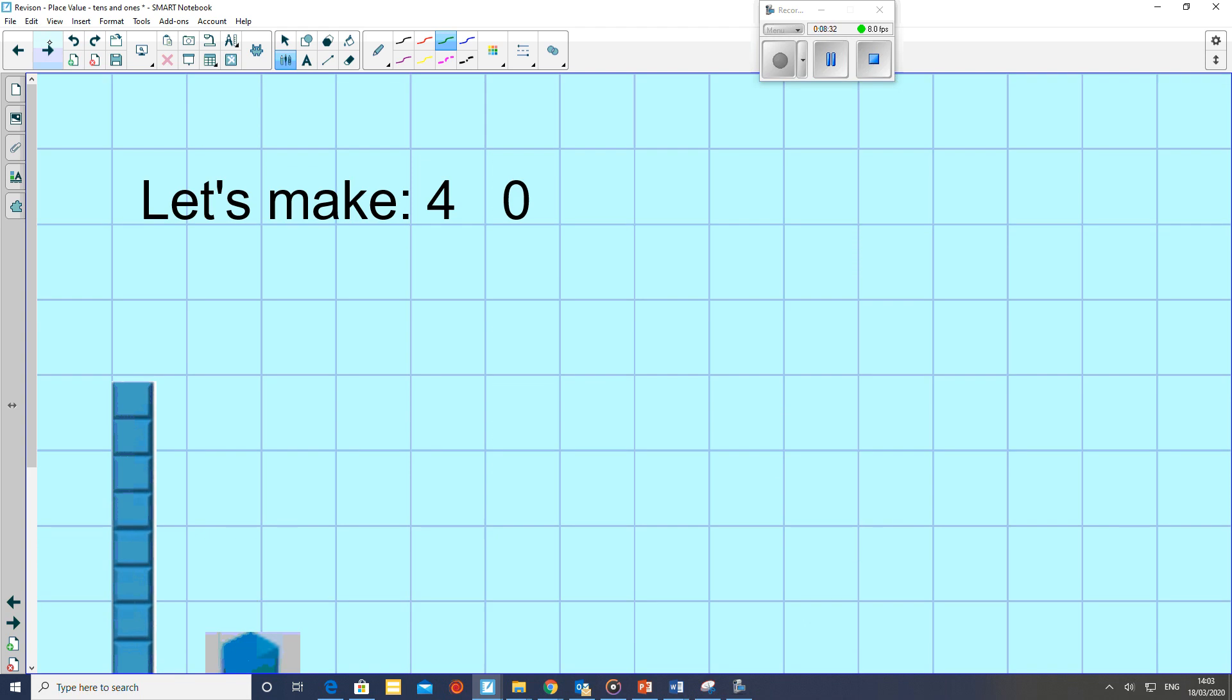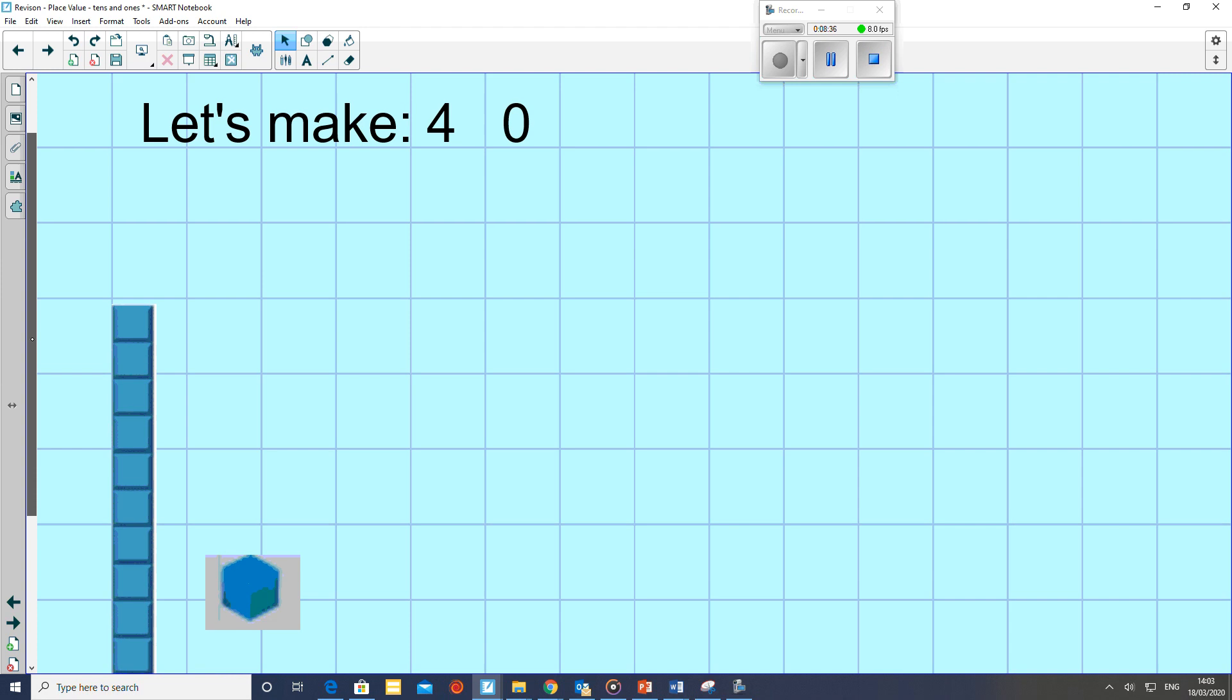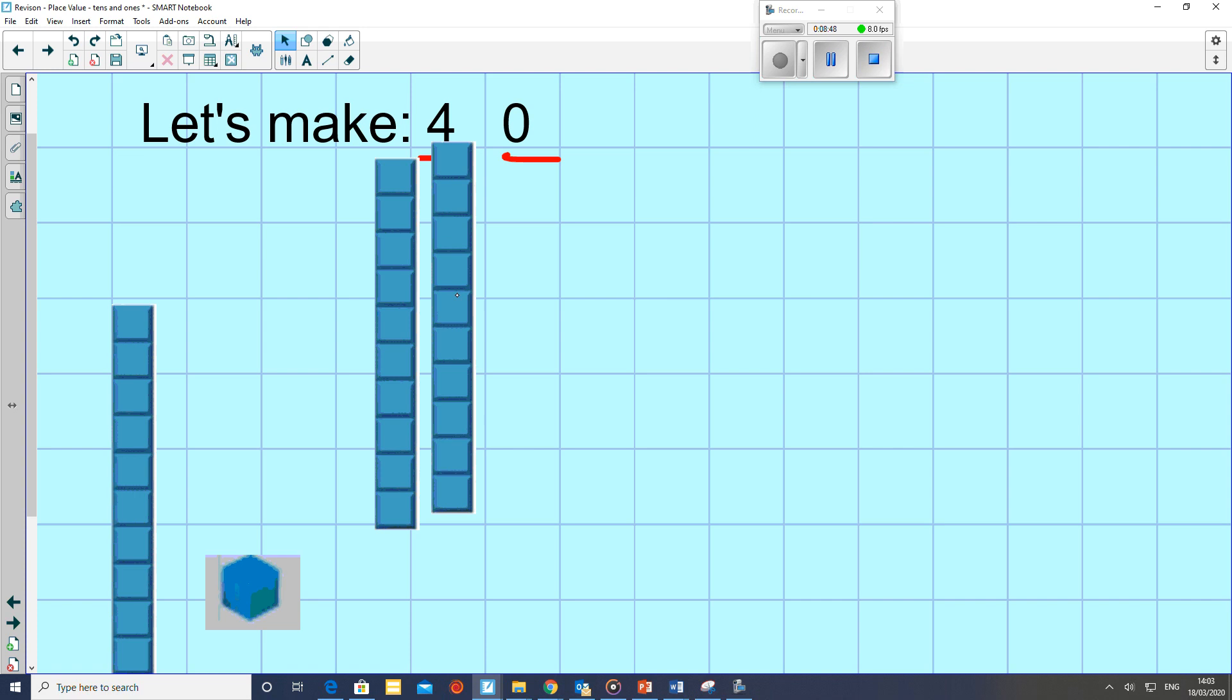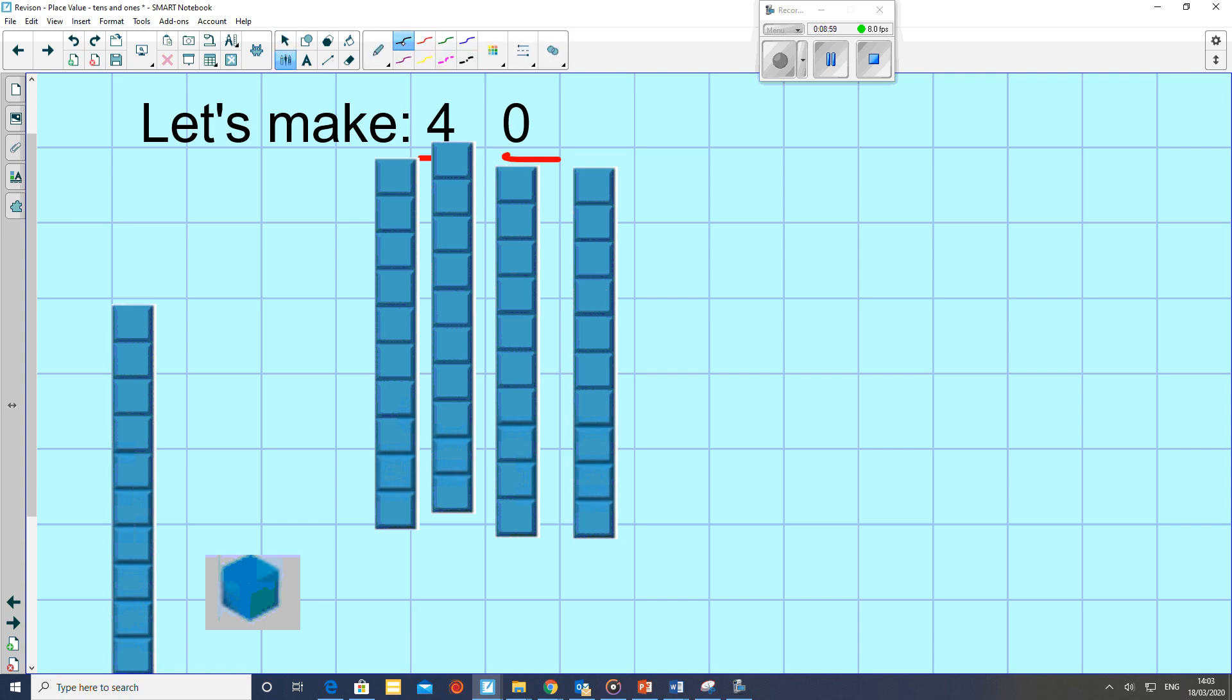Okay. Let's make 40. Let's look at the number. We've got 4 tens. And we have no ones. So let's bring it on. We've got 4 lots of 10. That's 10, 20, 30, 40. So I'm going to stop here and think. Do I need to add any ones? No, I don't.